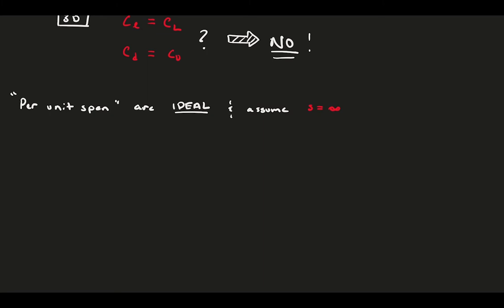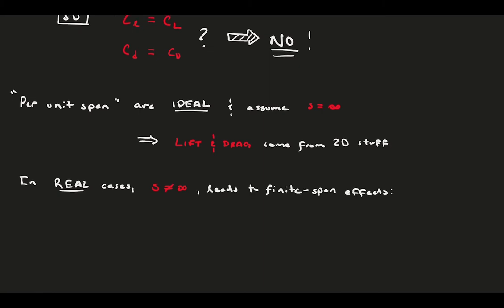Per unit span quantities assume an ideal wing with infinite span, in a sense, no finite wing effects. The lift and drag only come from 2D sources. However, in real cases, the span of the wing is not infinity, and there are some interesting end effects that occur.